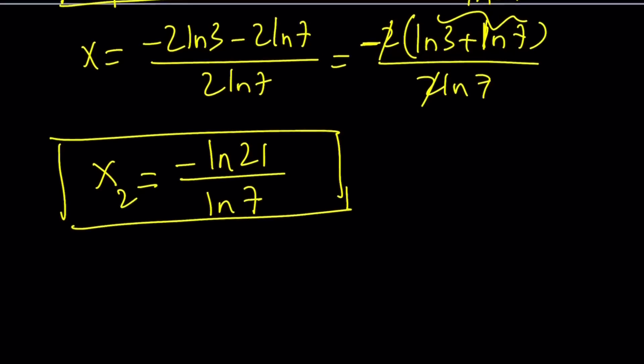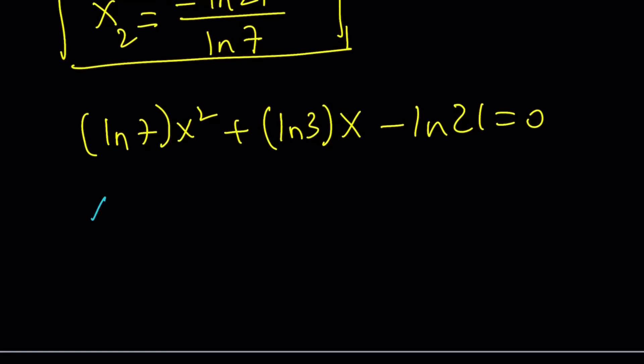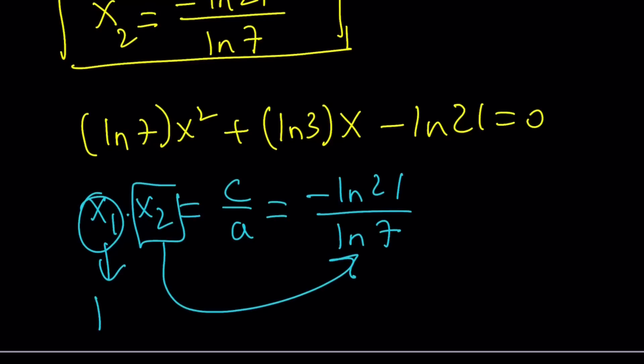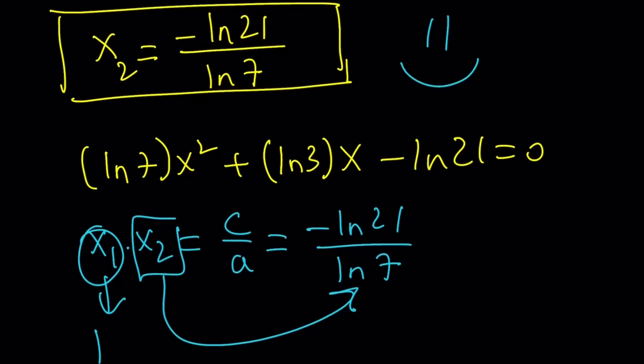So, isn't there an easier way to do this? Absolutely. Of course, when you got the equation, let's go ahead and take a look at the original equation one more time. It was ln 7x squared plus ln 3 times x minus ln 21 equals 0. So we do know from Vieta's formulas, and we've done quite a few videos on Vieta's formulas. If you remember, check out the playlist. x sub 1 times x sub 2 is c over a. And that is actually equal to negative ln 21 over ln 7. Now, we do know that one of the roots is 1. That gives us the second root automatically, which is the product. So that's a much faster way. If you know one of the roots is 1, then finding the other one is fairly easy.